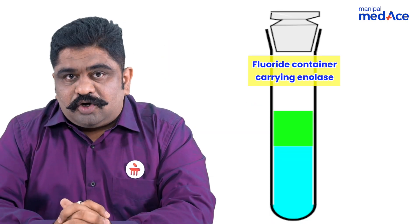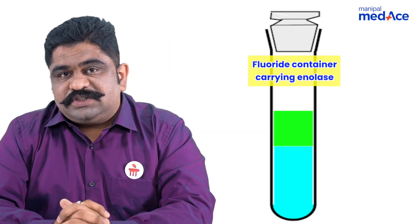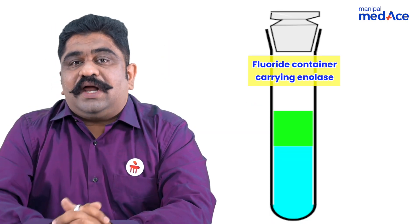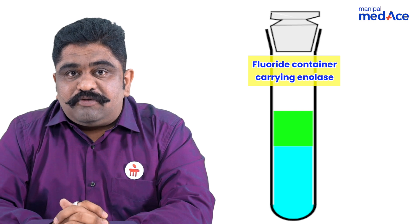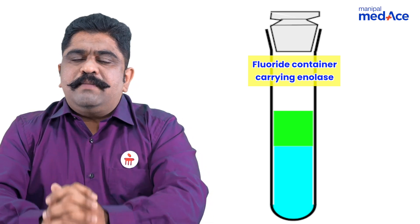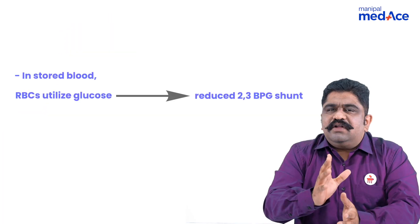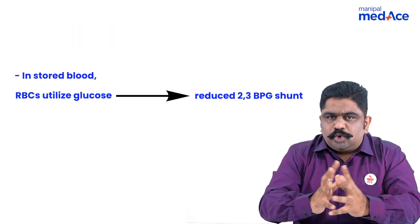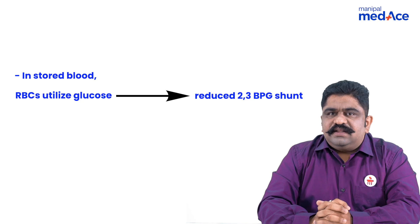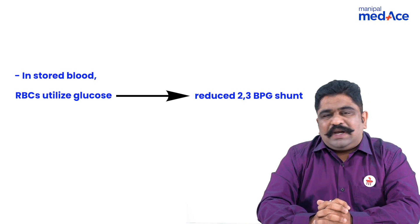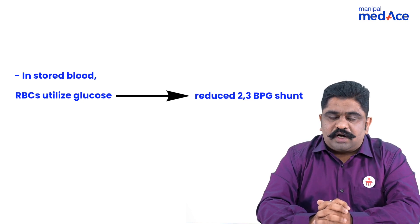This can be applied as a laboratory principle — whenever you inhibit glycolysis by using enolase, you are trying to collect a blood sample for measurement of glucose. Remember, whenever blood is stored as stored blood, the 2,3-BPG shunt will not work, because of which 2,3-BPG will fall. This is a clinically important statement.